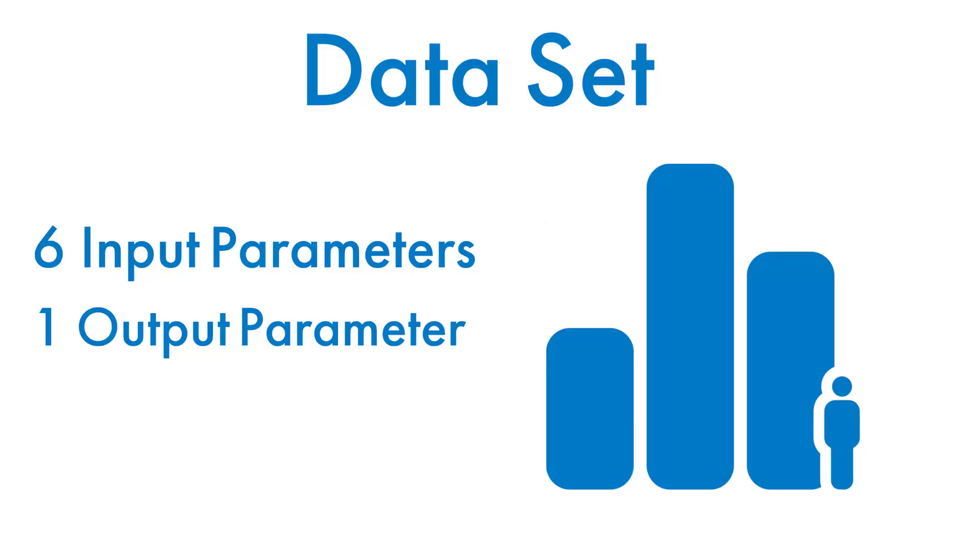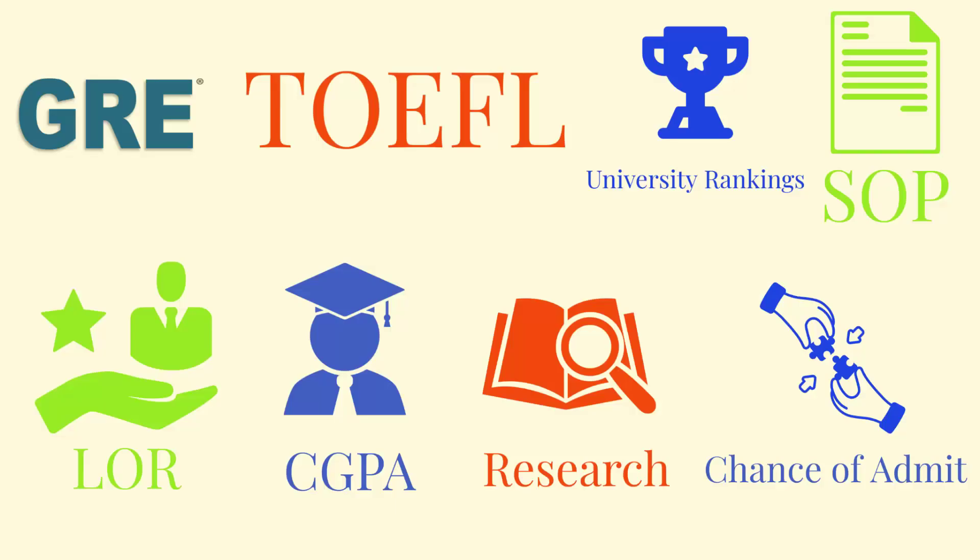The data set contains a total of seven parameters — six input parameters and one output parameter. The six input parameters considered important during the application for master's programs are: GRE scores out of 340, TOEFL scores out of 120, university rating out of 5, statement of purpose and letter of recommendation strength out of 5, undergraduate GPA out of 10, and research experience as either 0 or 1. The one output parameter is the chance of admit, ranging from 0 to 1.